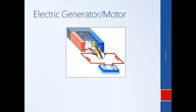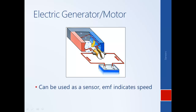Another type of component that can be used as a sensor is an electric generator. It has the same structure as a motor. With a motor, you apply a voltage to generate motion; with a generator, it works in the opposite way — motion generates a current output. This generator can be used as a sensor because the voltage, the EMF it generates, indicates the speed of the generator. The principles behind this will be discussed in a later module.